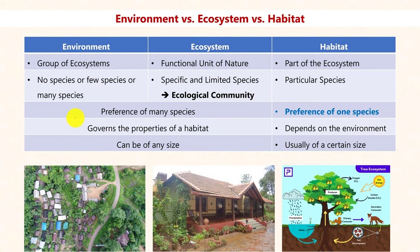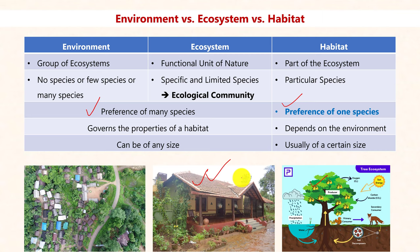An environment and an ecosystem can be the preference of many species, whereas in a habitat, the species are very limited in number and it is always the preference of one species. For example, humans may live in various parts of the earth, but our preferred habitat is always a house. For a bird, regardless of where it lives, its preferred habitat is a nest. Environment and ecosystem govern the properties of a habitat — not vice versa — because major changes in the ecosystem, such as a drought, will indirectly affect the tree habitat.